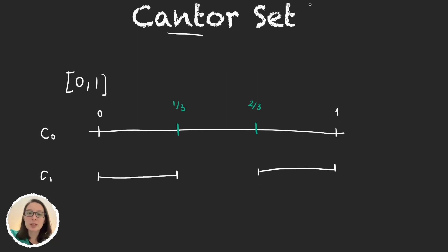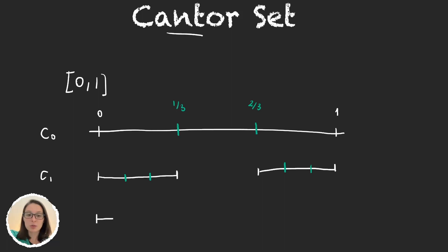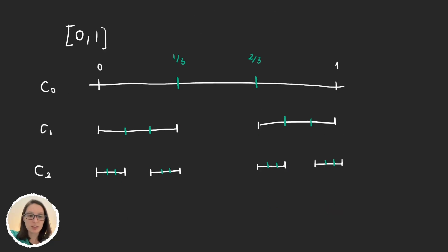Now we continue doing the same. We grab the first interval, divide it in thirds, and do the same for the second one. So in the second step of our construction we have four intervals. And again we do the same — we grab each of these intervals, divide each in thirds and remove the middle part. In the third stage we would have eight intervals.